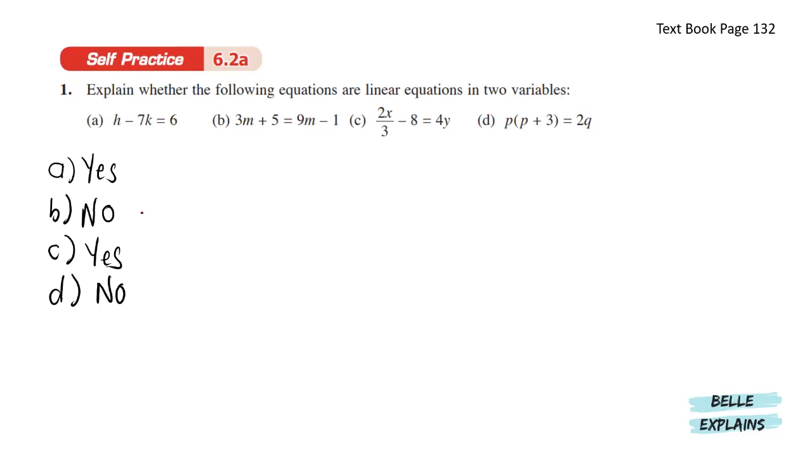Next, 2x over 3 minus 8 equals 4y. Yes, because there are two variables which are x and y and the highest power is 1.